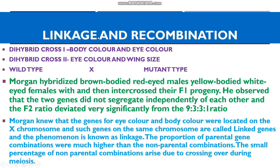Morgan performed dihybrid crosses in two crosses. In cross 1, he selected two characters: body color and eye color. The normal body color is brown and the mutant form has yellow body; the normal eye color is red and the mutant has white eye color. In cross 2, the two characters chosen were eye color and wing size — normal eye color is red, mutants have white eyes; normal wing size is long and the miniature wing is the mutant form.